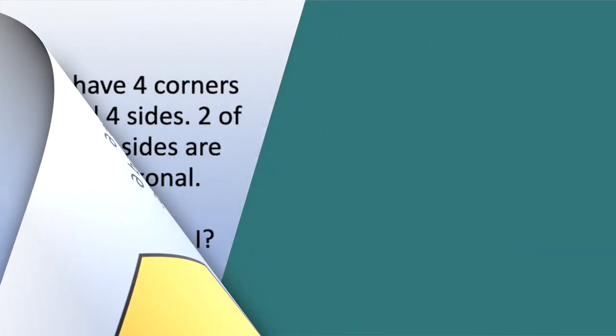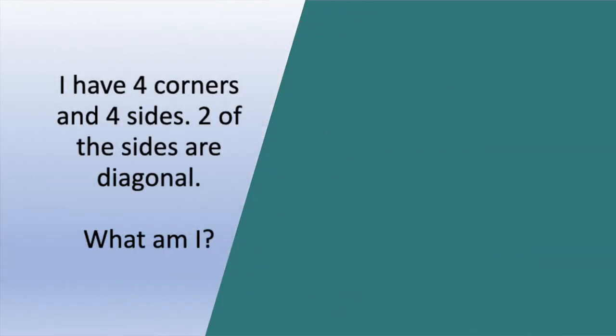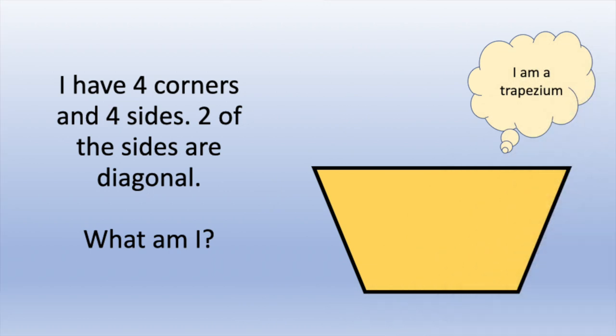I have four corners and four sides. Two of the sides are diagonal. What am I? That's a tricky one — what do you think? I am a trapezium. Did you get that one? Well done.